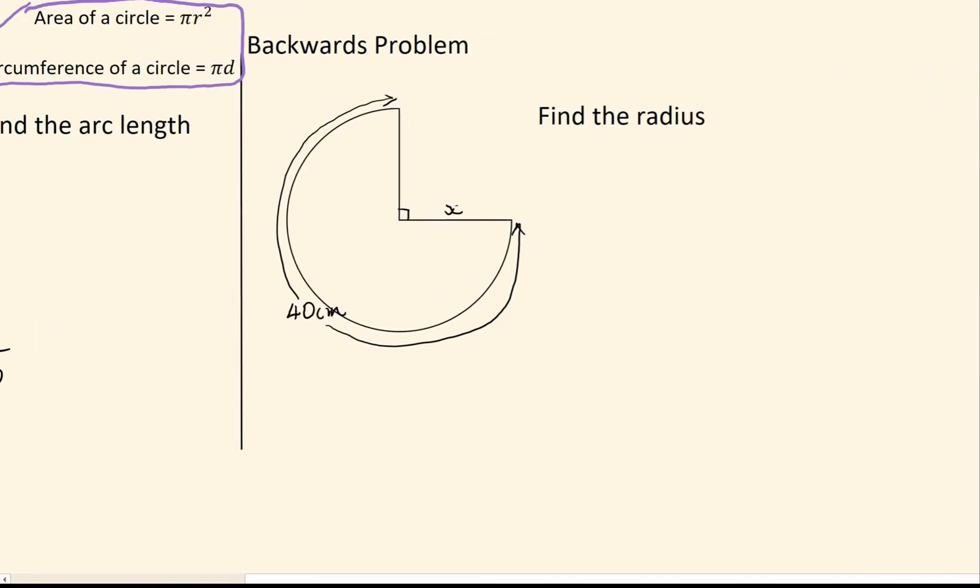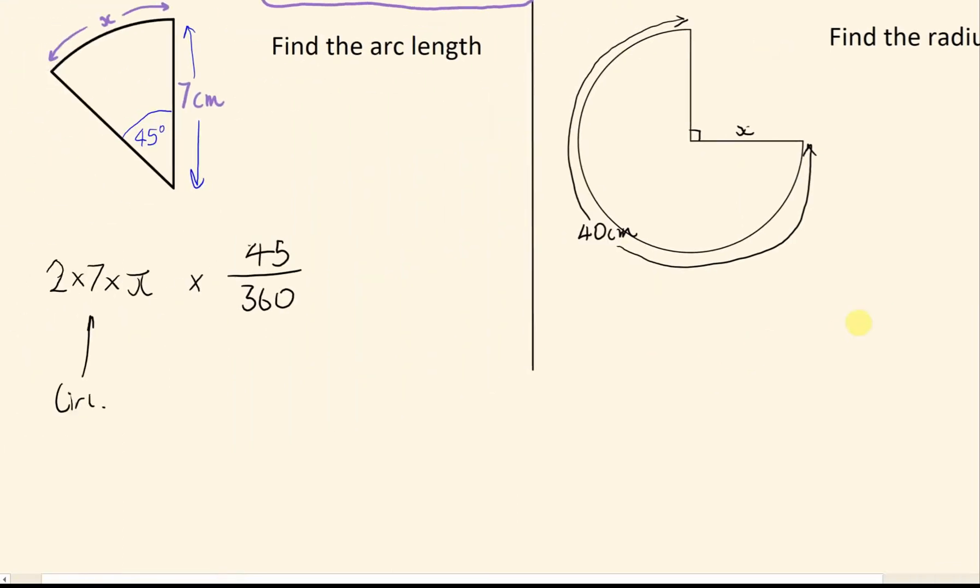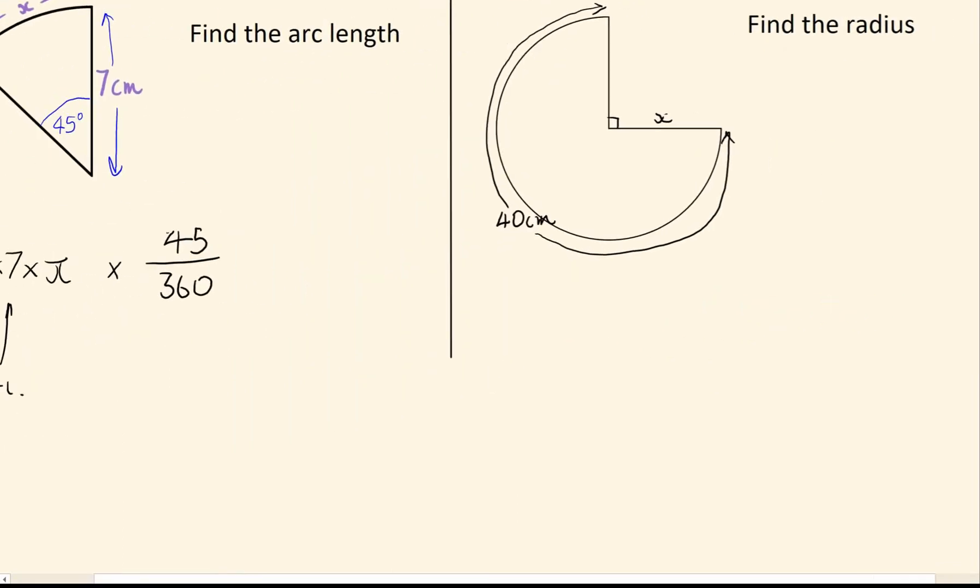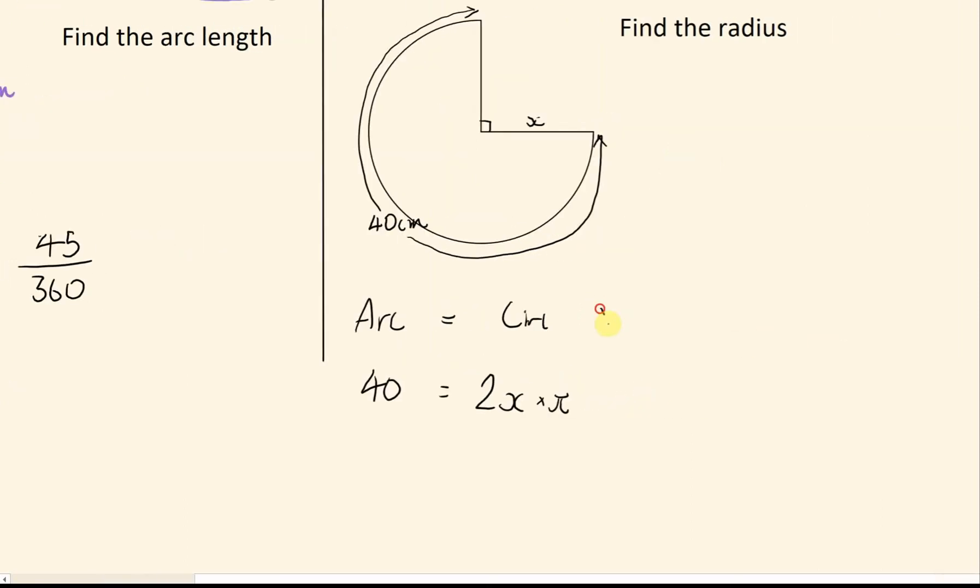We'll look at the backwards problem, where we need to find the radius given the angle and the arc length. So we know the arc length, which in this case is 40, will equal the circumference. To work out the circumference, we need to double the radius and then times it by pi, so 2 lots of x times pi.